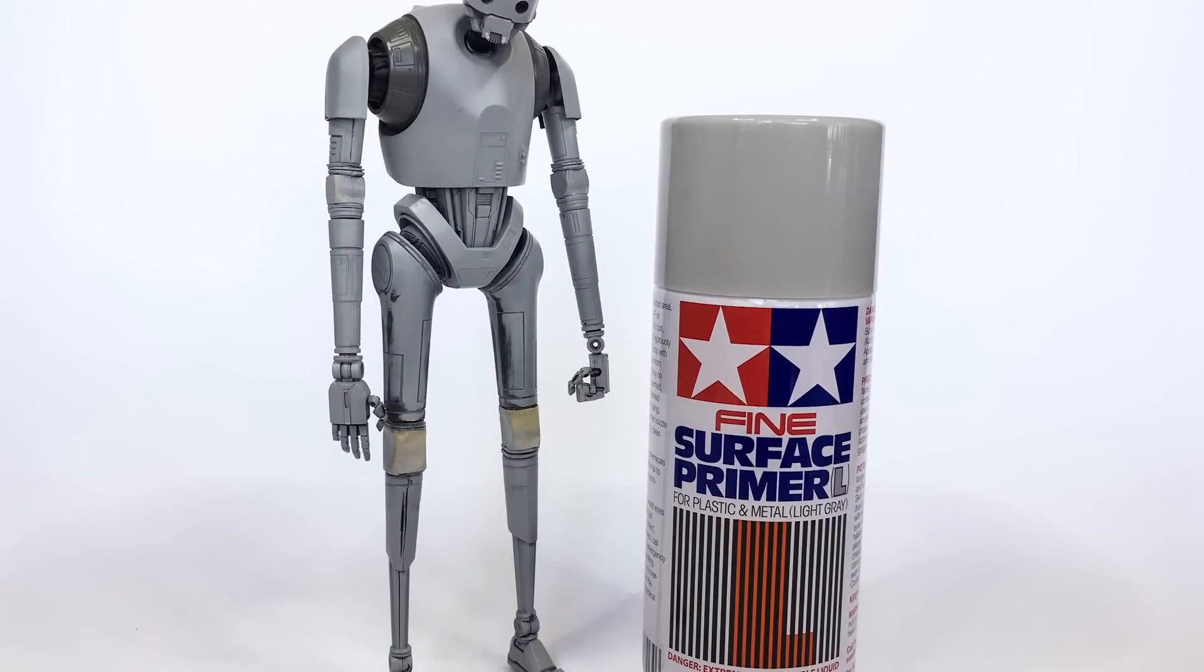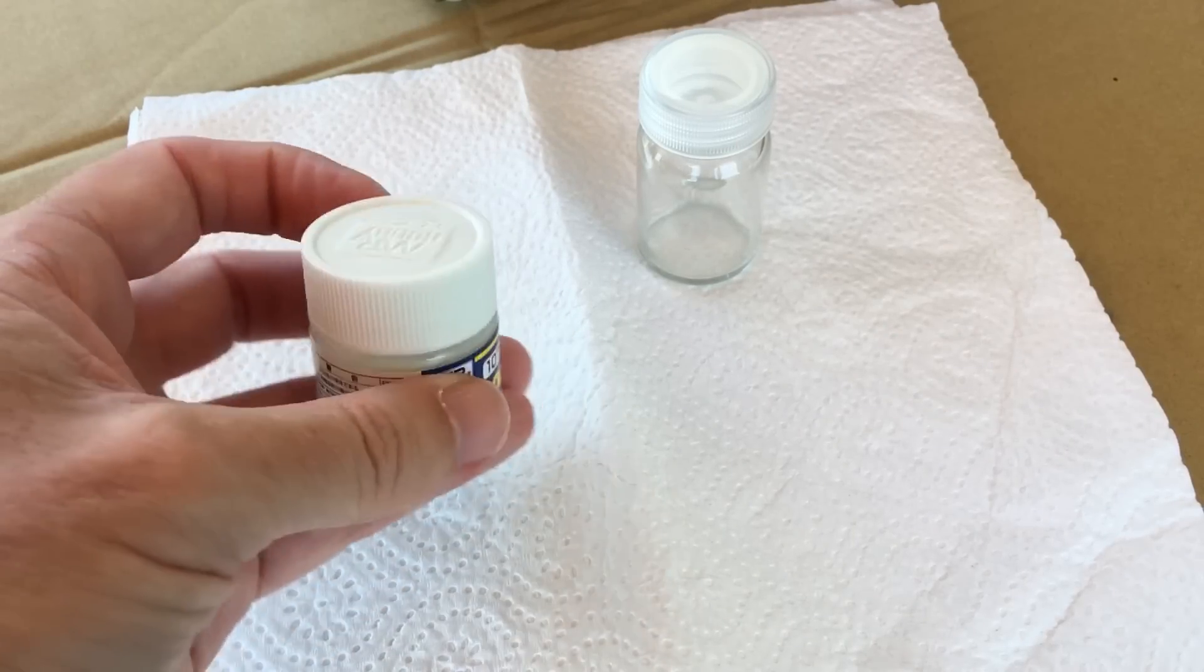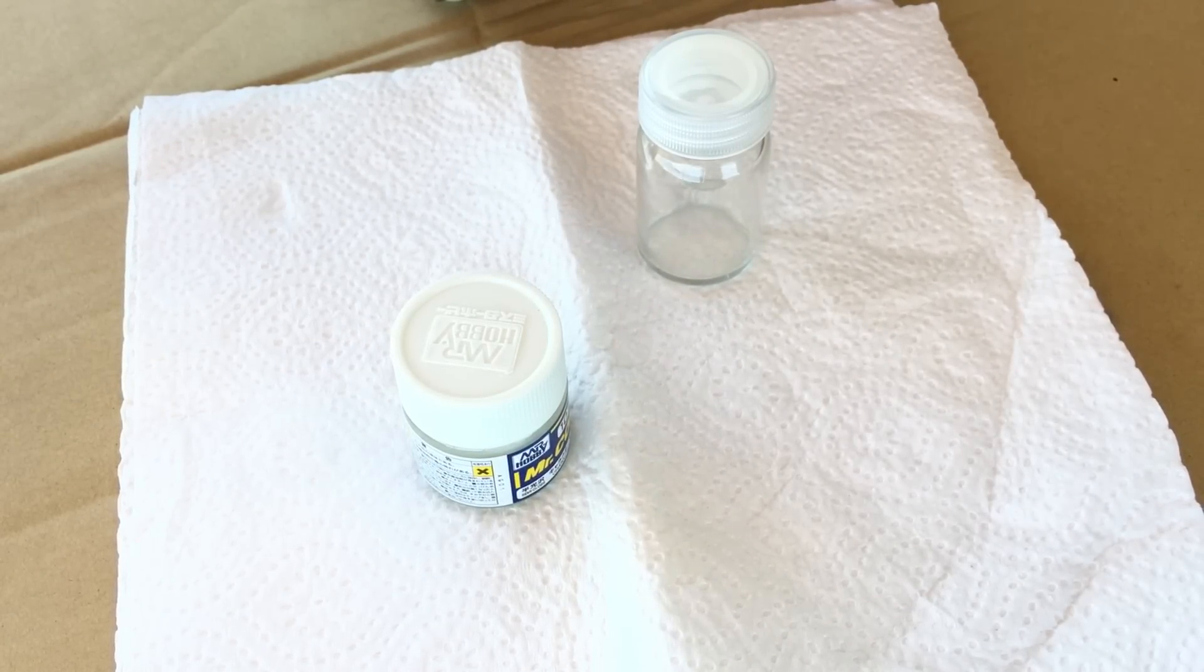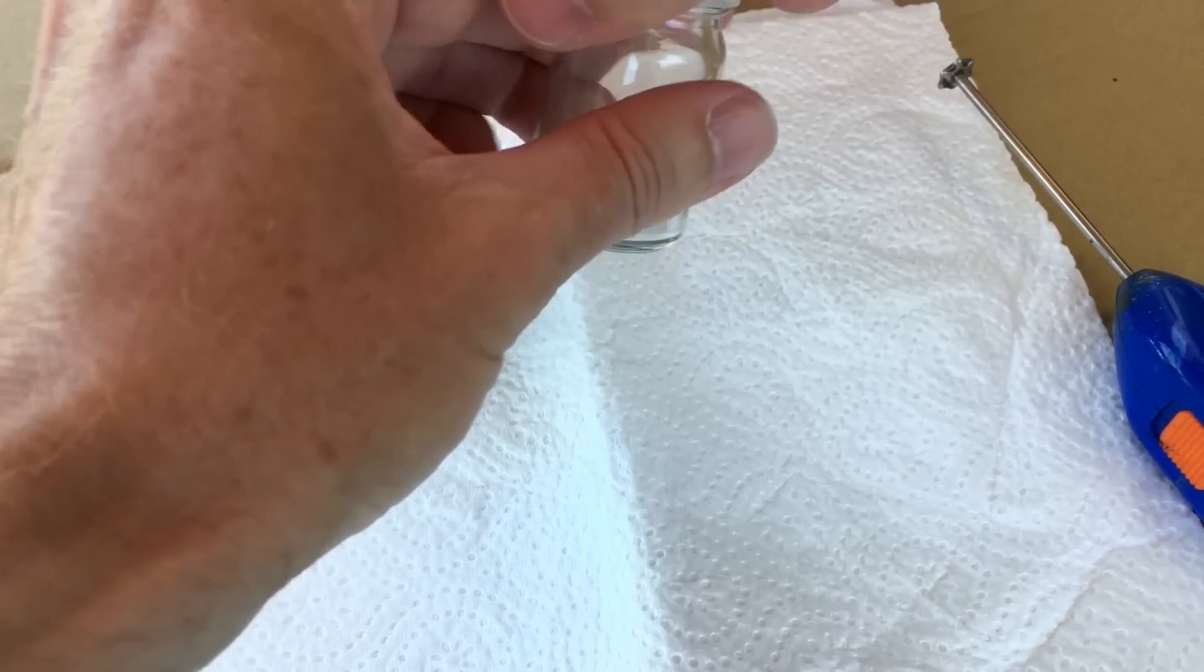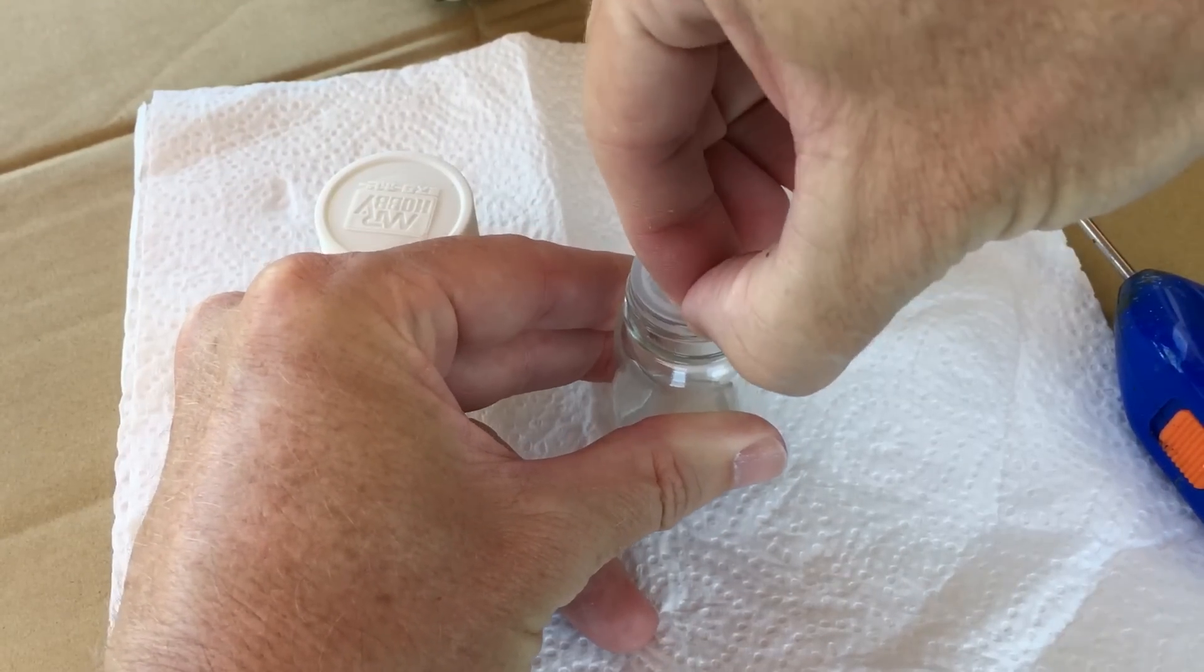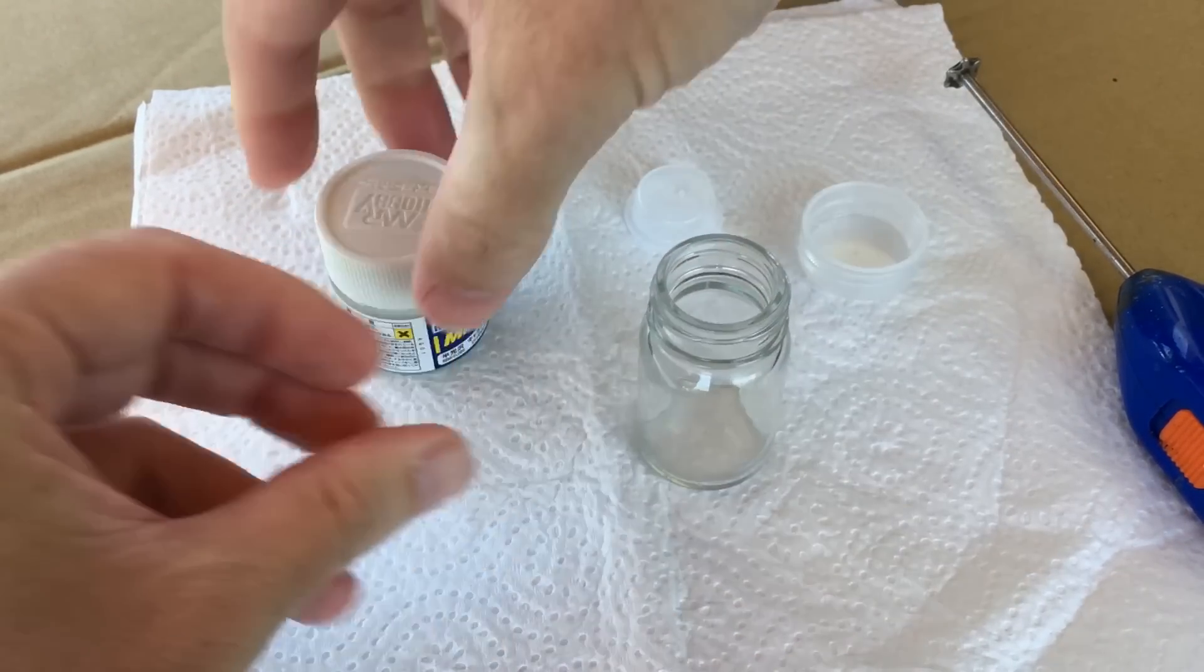Here he is. K2SO resplendent in primer. Next up, airbrushing Mr. Color Character White. I went with Character White because it's off-white, semi-gloss and it's got a really cool sort of grayish tinge to it that I thought would look really good for the Imperials.